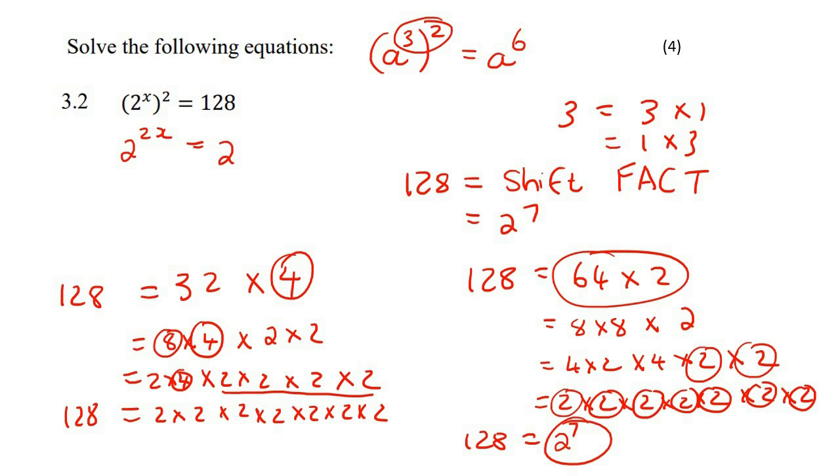So, now what you do is you just change this to 2 to the power of 7. And now, when these numbers are the same, you can cancel them. So, you just ignore them completely. And now, you end up with 2x is equal to 7. How do we get x alone? You divide both sides by 2. And so, we end up with x equals to 7 over 2.